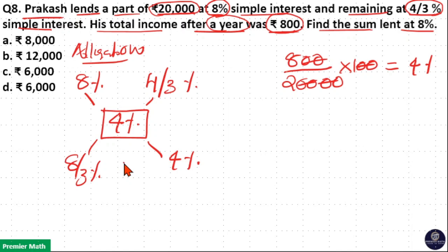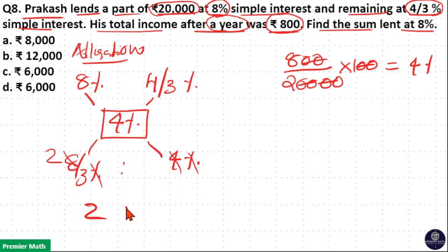Now, taking the ratio of 8/3 and 4%: the percentage signs cancel, and 4 goes 2 times into 8, giving 2/3 to 1. That means the ratio is 2 to 3. So the sum lent at 8% is 2 parts and the sum lent at 4/3% is 3 parts.